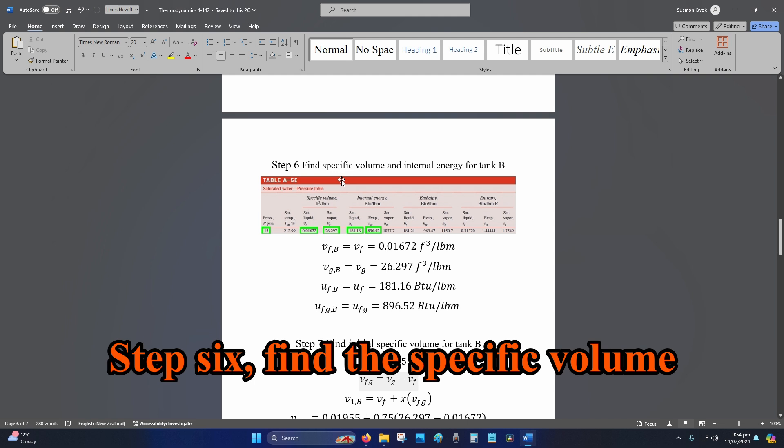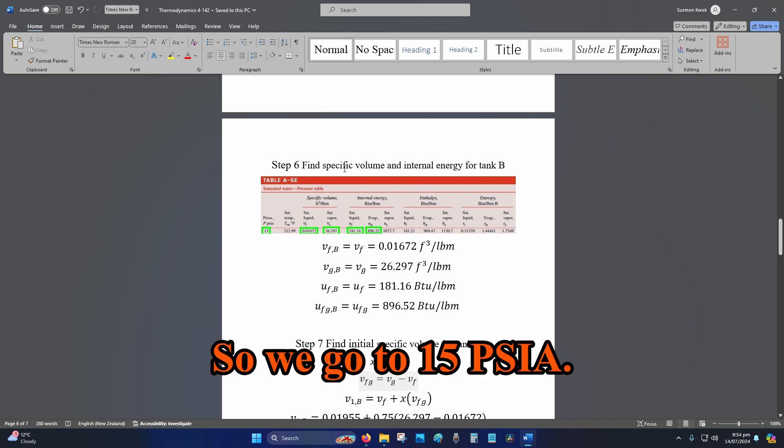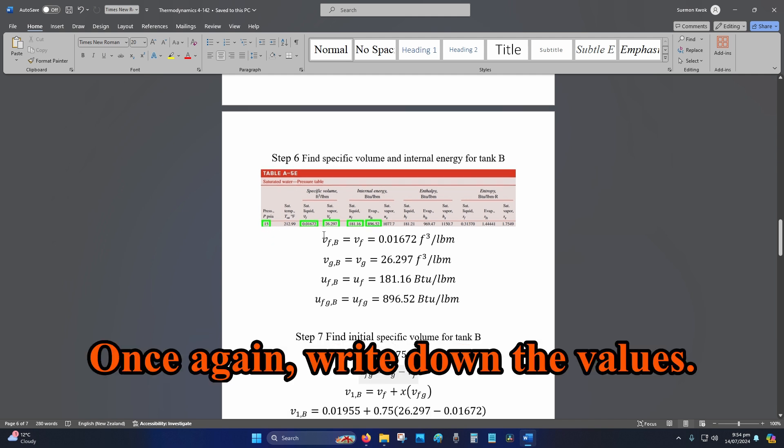Step 6, find the specific volume and internal energy for tank B. So, we go to 15 PSIA. Once again, write down the values.